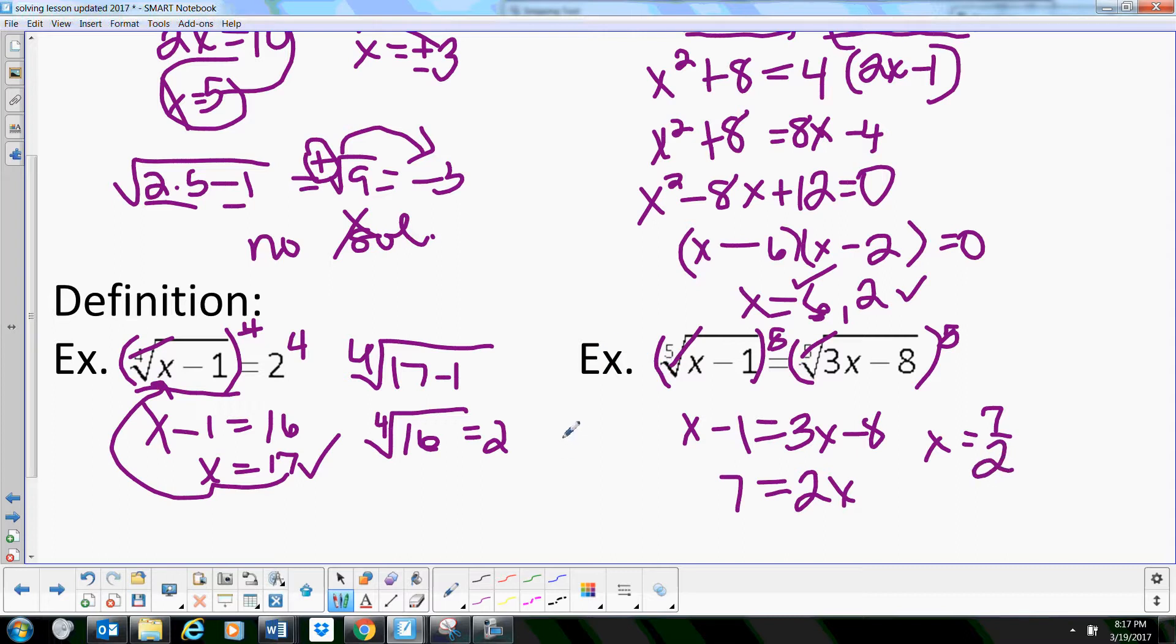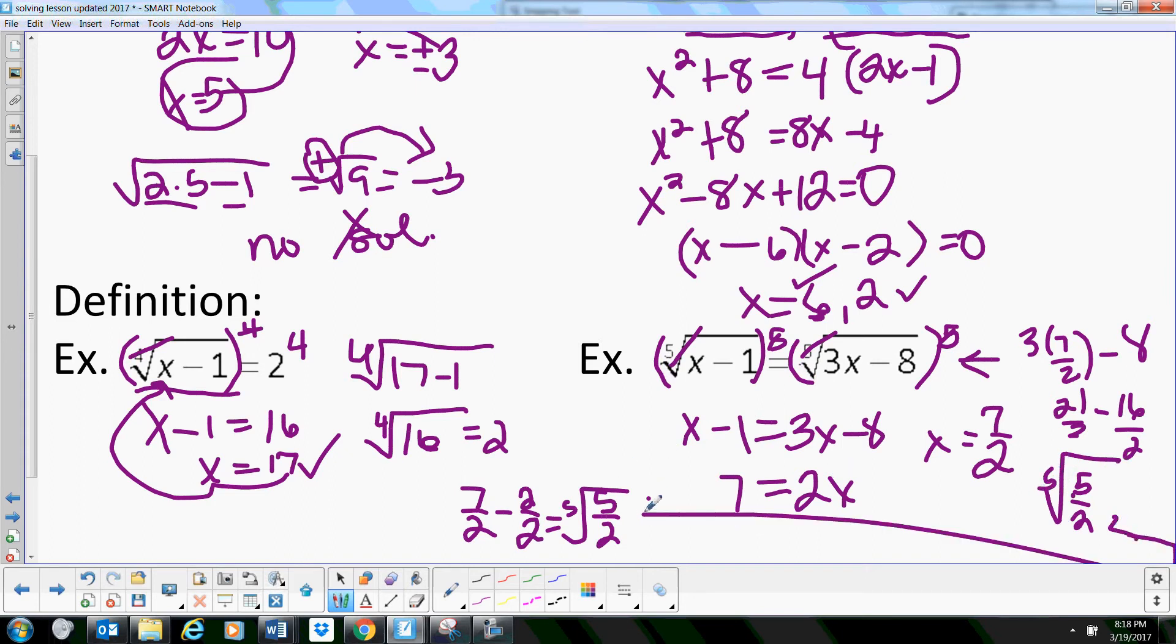Okay, and then we can plug that in. 7 halves minus 1 which is 2 over 2 that equals 5 halves. So we're taking the fifth root of 5 halves. And let's see what the other side is. Let's plug into this side. So 3 times 7 halves minus 8, that's 21 halves, so that's minus 16 halves which leaves us with 5 halves, and that's all under a fifth root. And notice these two are equal. They're equal, therefore that is a good solution. So 7 halves is a solution.